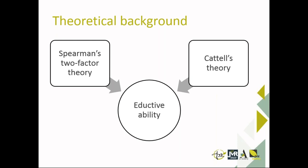Spearman regarded G as pervading all performance on tasks. Cattell, in turn, proposed that intelligence consists of two components: fluid and crystallized intelligence. Non-verbal tests based on abstract reasoning primarily assess fluid intelligence, while crystallized intelligence primarily relates to tests involving language and numbers. These two components were identified as inductive (fluid) abilities and reproductive (crystallized) abilities.